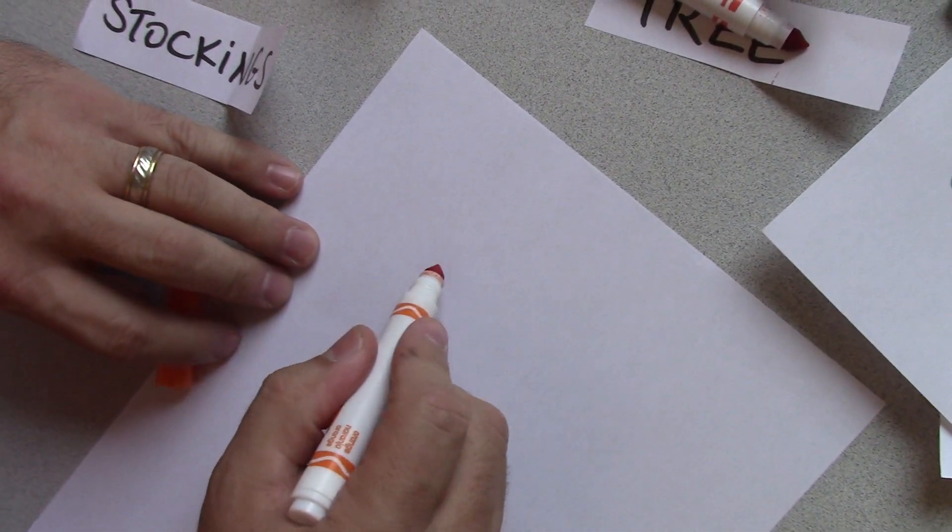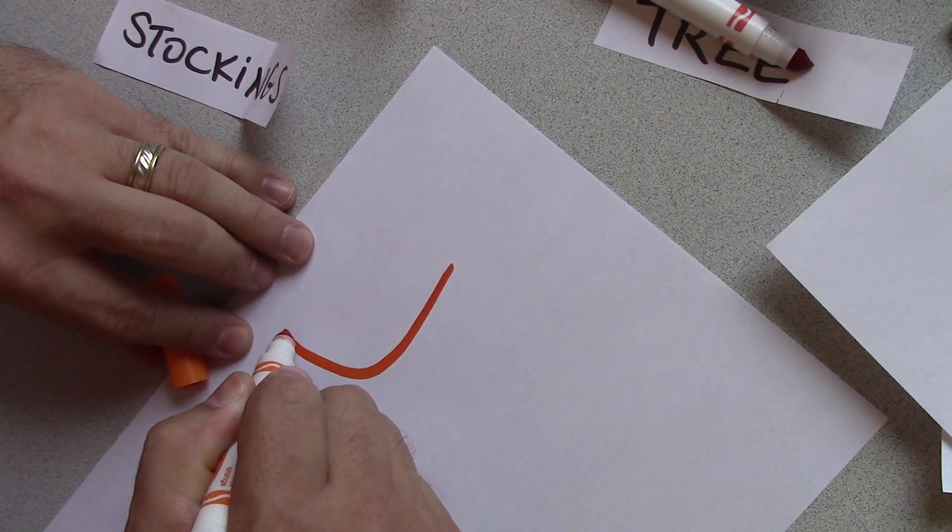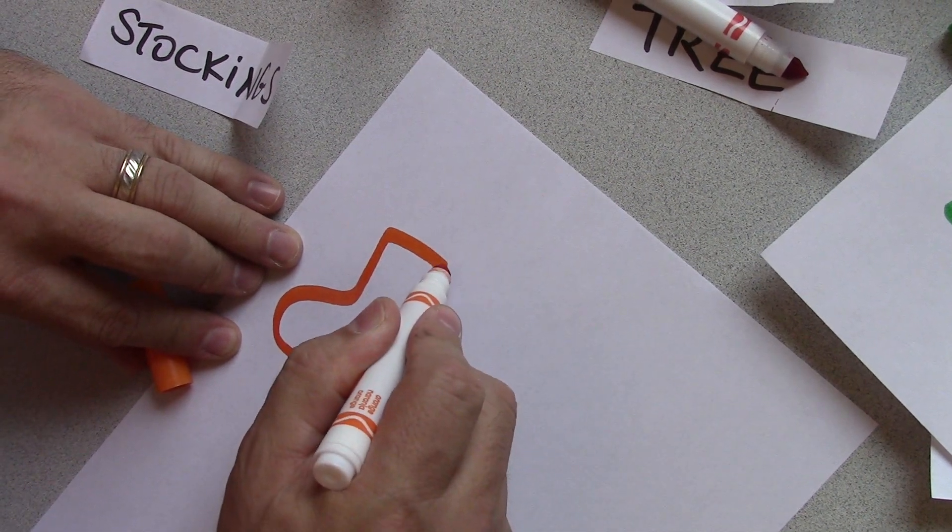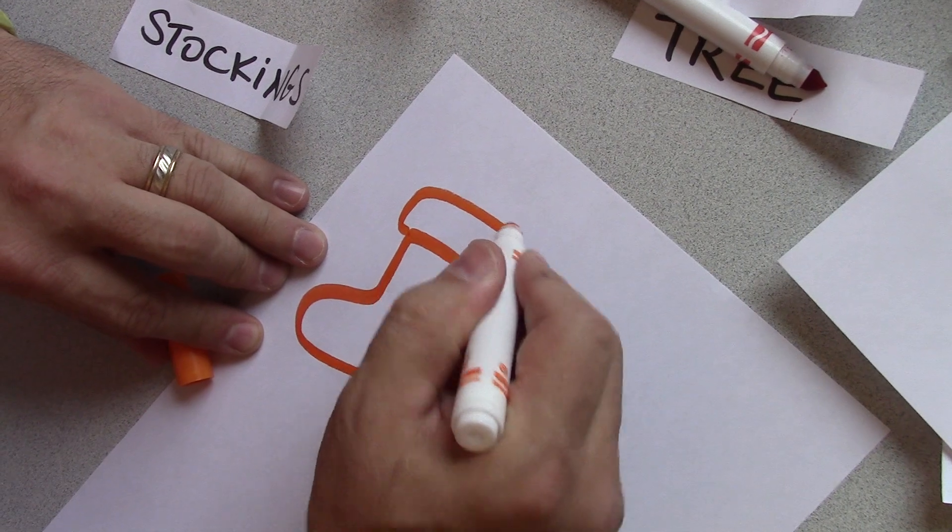You can do a letter J with a stocking too. Here's the J. Sort of a J. Maybe I just fooled you. I faked you out here. Come up here. You got to know how to draw stockings and mittens. Boy, I'm telling you.